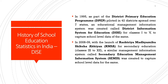In 2008-09, the Rashtriya Madhyamik Shiksha Abhiyan was launched with a focus on secondary education from classes 9 to 12. By this time, enrollments in primary schooling had gone up in India, as they had elsewhere in developing countries. For secondary education, a similar management information system called the Secondary Education Management Information System (SEMIS) was created to capture school-level data for secondary education.